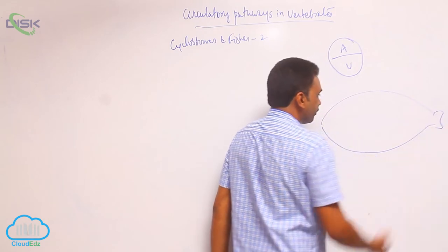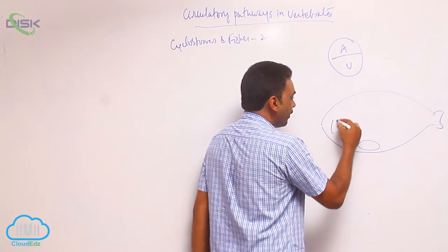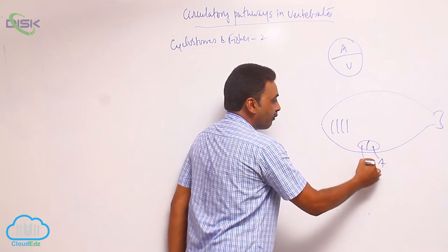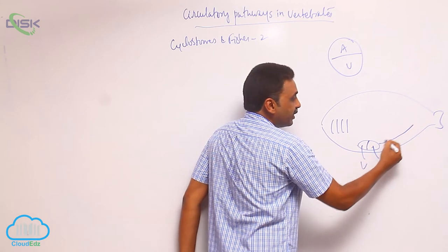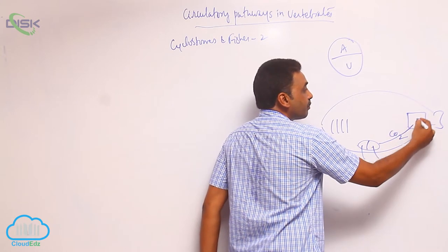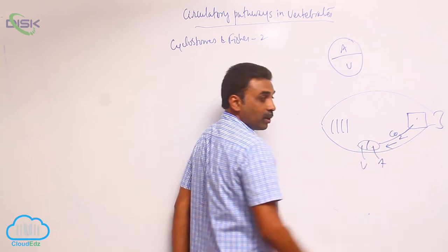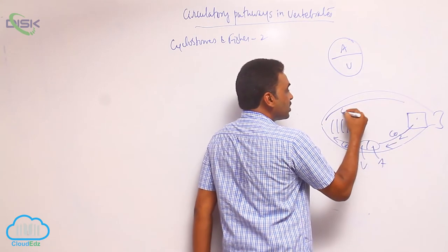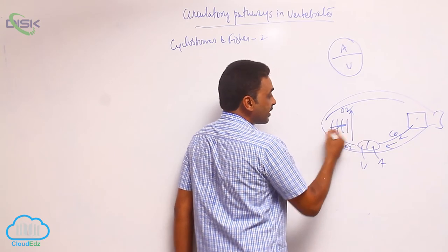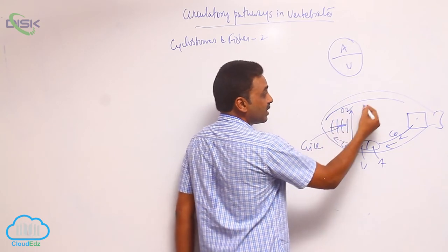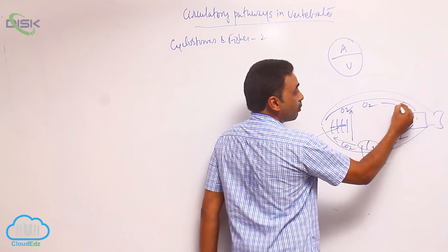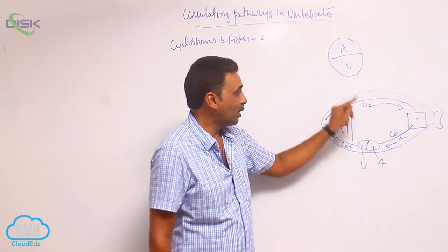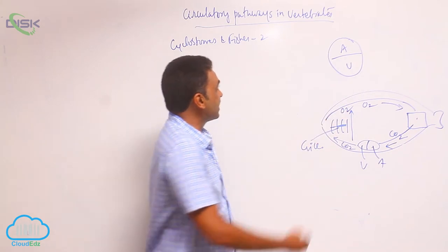In the fish, the heart is located very close to the gills. There is one atrium and one ventricle. The heart receives deoxygenated blood from tissues, pumps it to the gills where exchange of gases occurs, and then oxygenated blood is pumped to all parts of the body. In a single circuit, the blood flows through the body only once, which is why it is called single circulation.